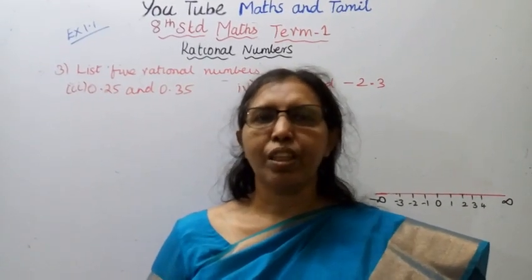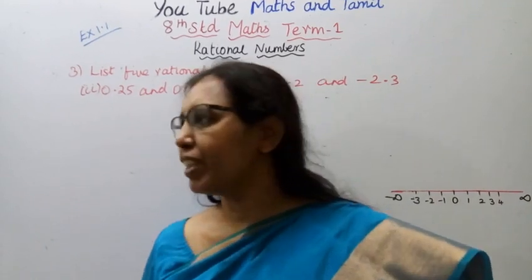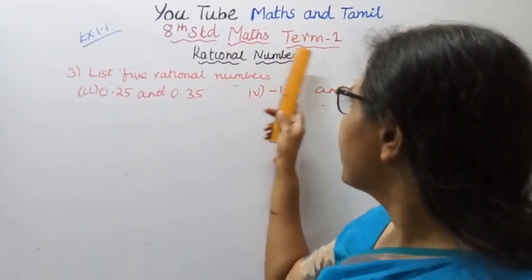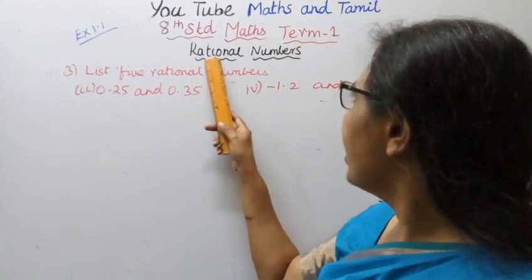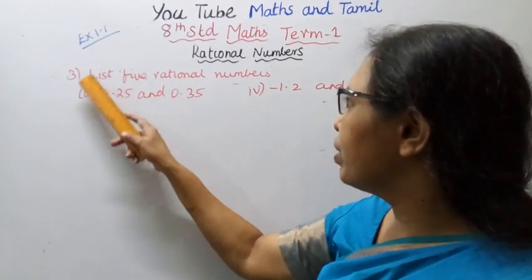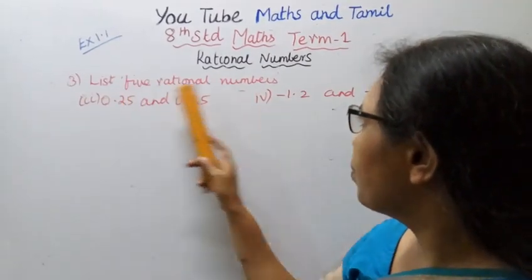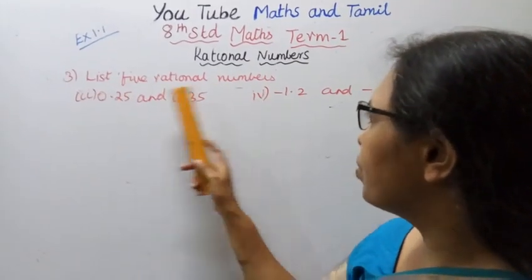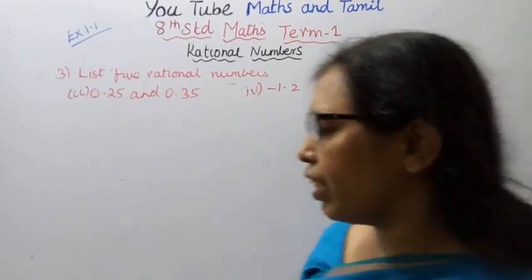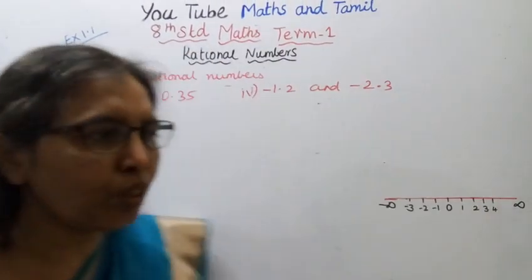Hello students, welcome to Max and Tamil channel. This is Max Term One, Rational Numbers, Exercise 1.1. The fourth subdivision asks us to list five rational numbers.